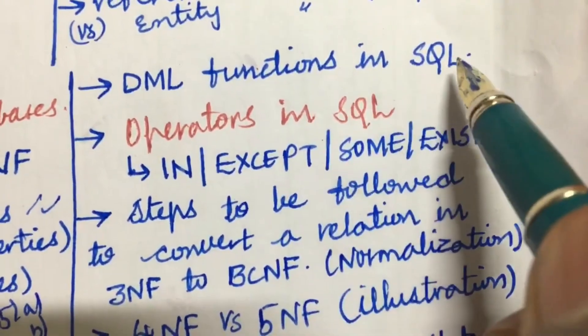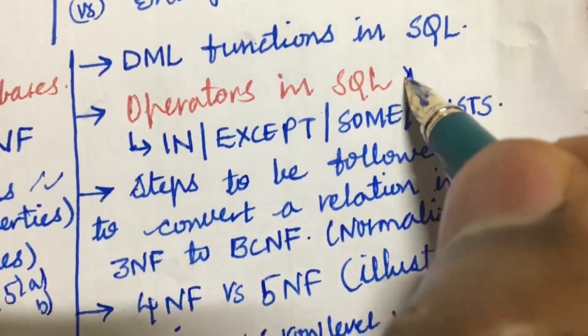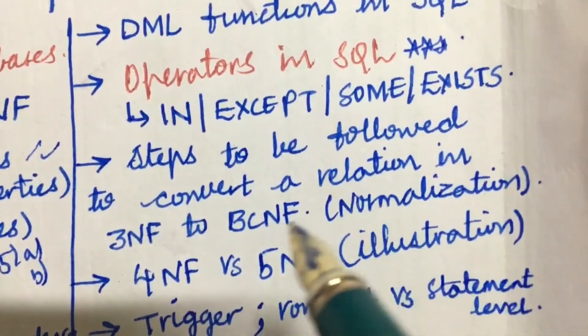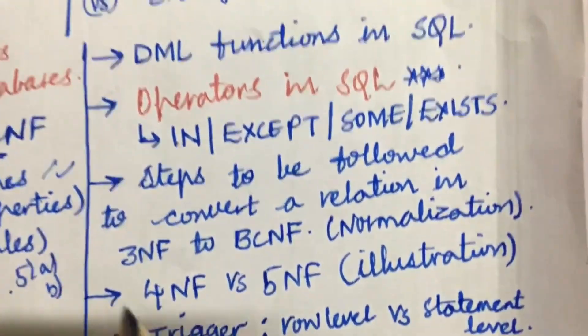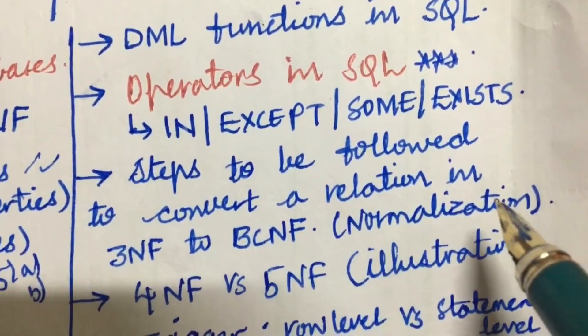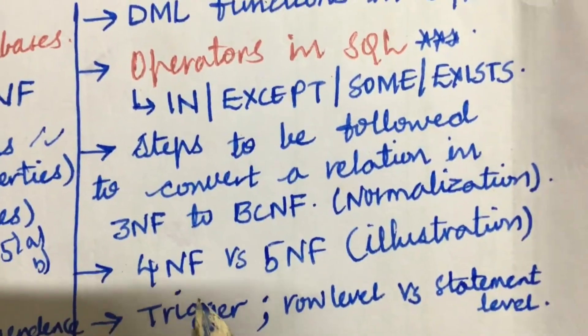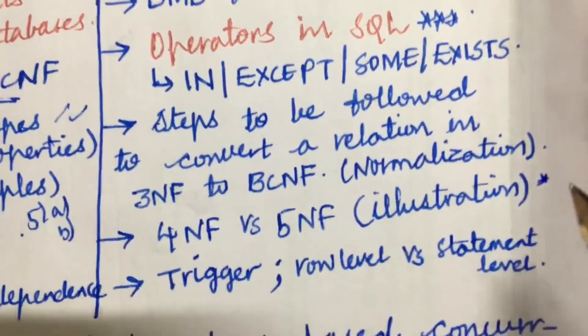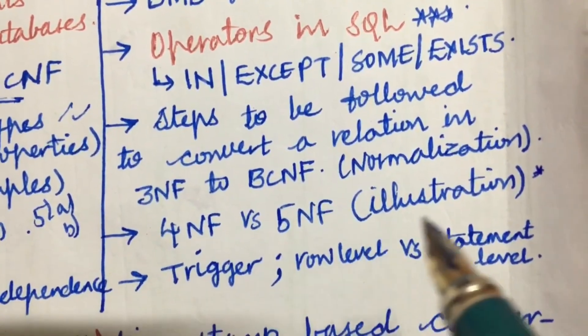DML functions in SQL, operators in SQL is also one of the very important and gunshot questions. Steps to be followed to convert a relation in 3NF to BCNF, normalization, and the differences between 4NF versus 5NF. You can be asked to illustrate both.